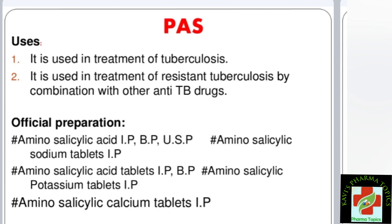Para-aminosalicylic acid is used as a TB drug — in the treatment of tuberculosis — in combination with other anti-TB drugs such as isoniazid and ethambutol. It is also used in resistant tuberculosis by combinations with other anti-tubercular drugs. Combinations such as isoniazid plus para-aminosalicylic acid are common combination formulas.